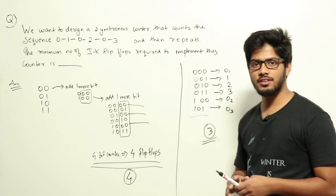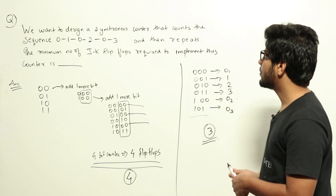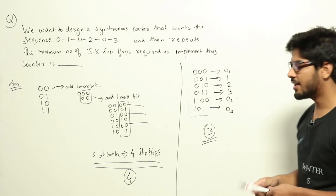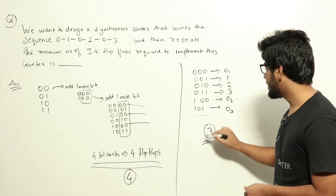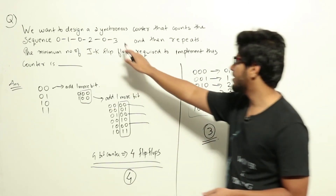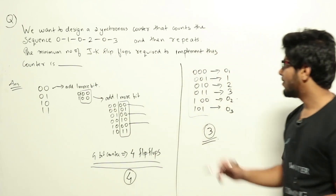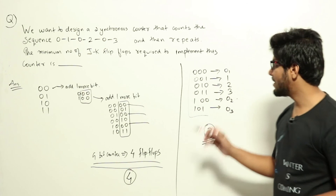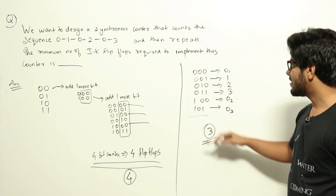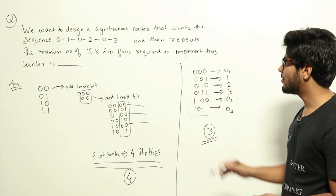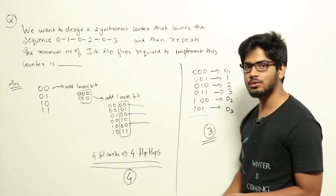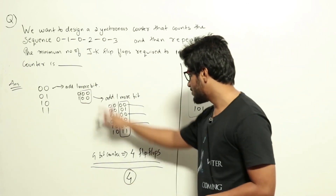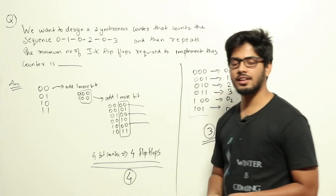The question did not restrict the use of additional combinational circuits, so technically the counter can be designed using three flip-flops since there are only six unique states. This was the answer expected by GATE authorities that year, but many students challenged it. As a result, both three and four were accepted as correct answers. However, the proper and direct design approach uses four flip-flops, so four is the preferred answer.